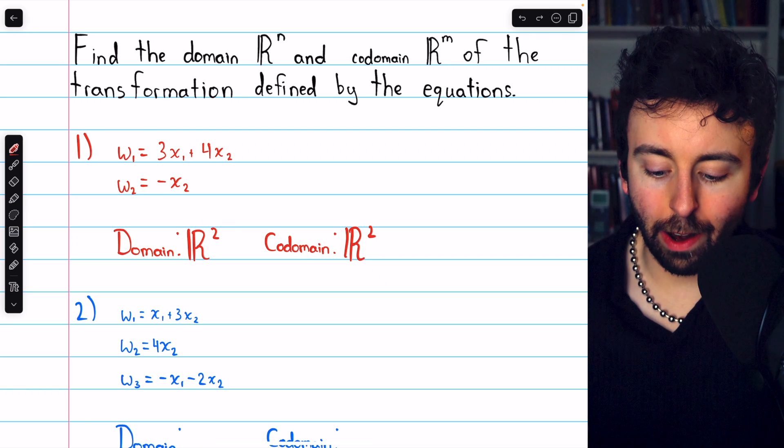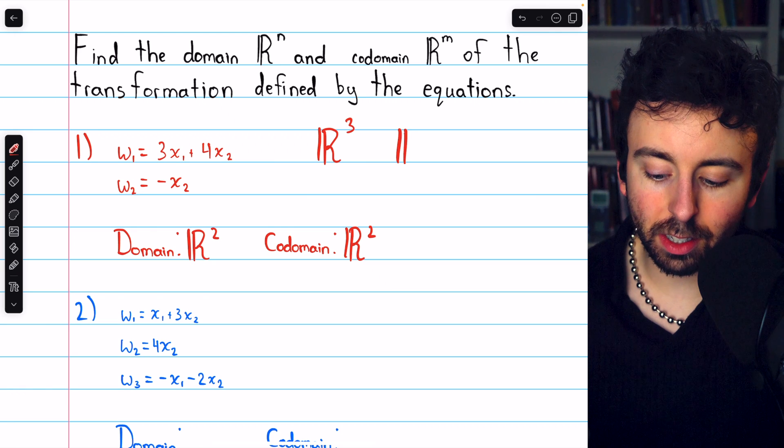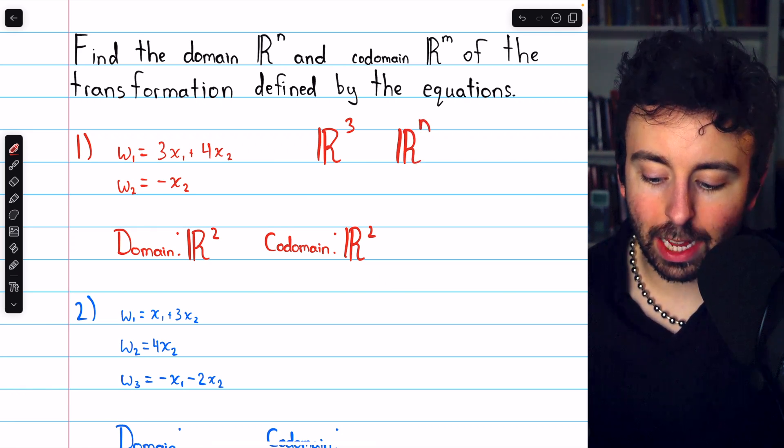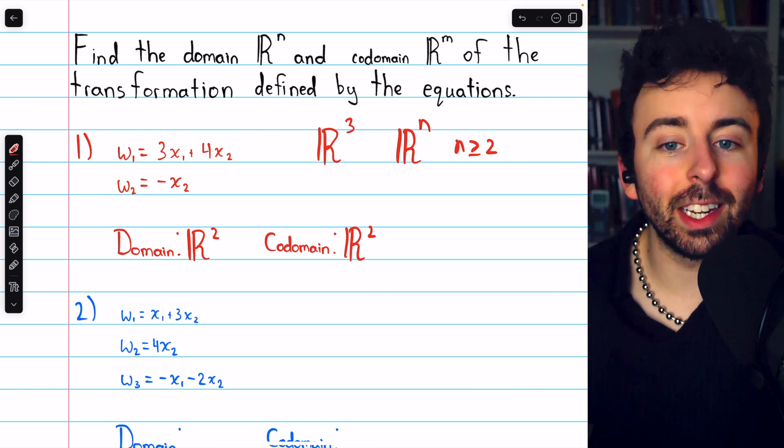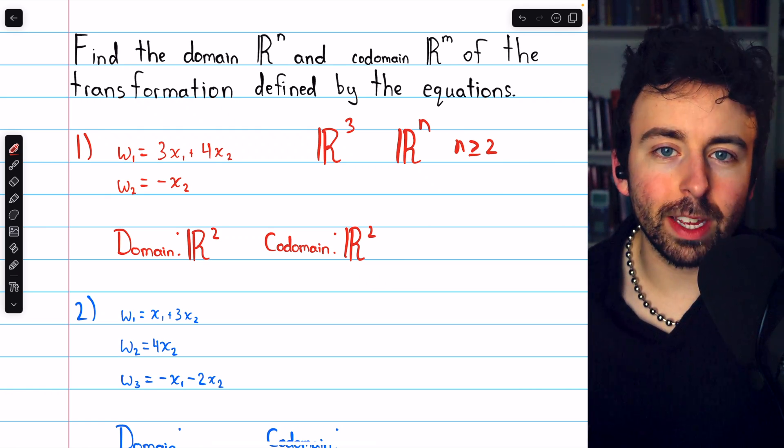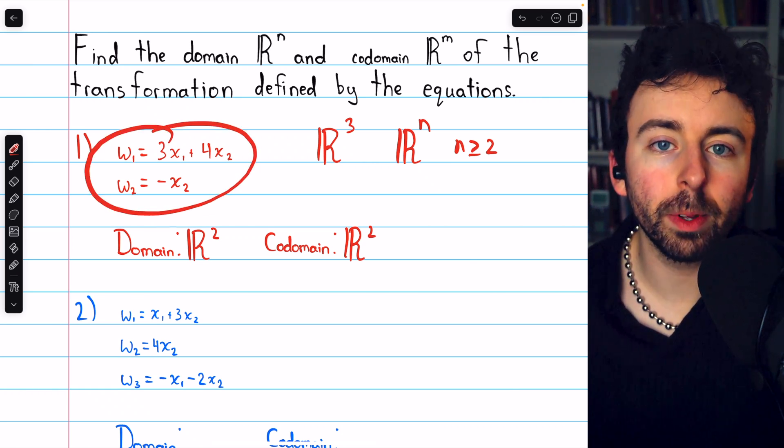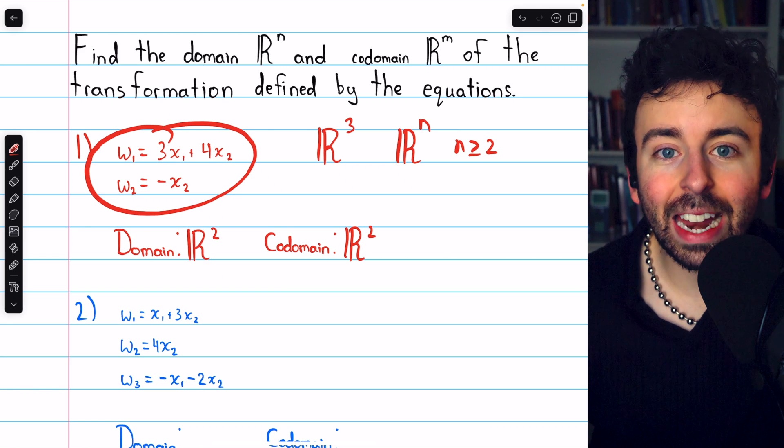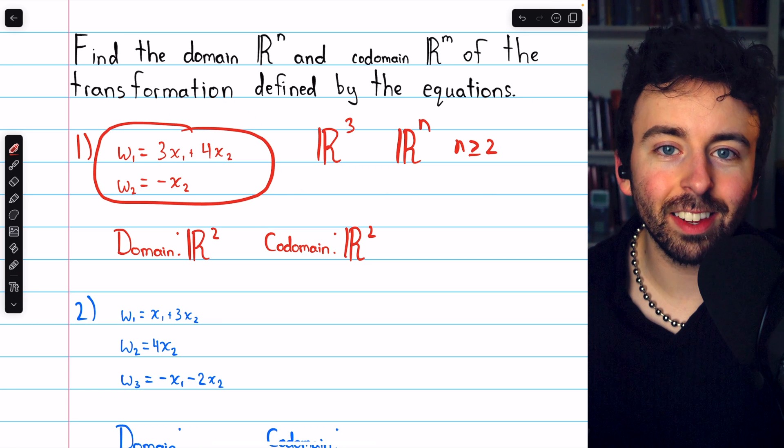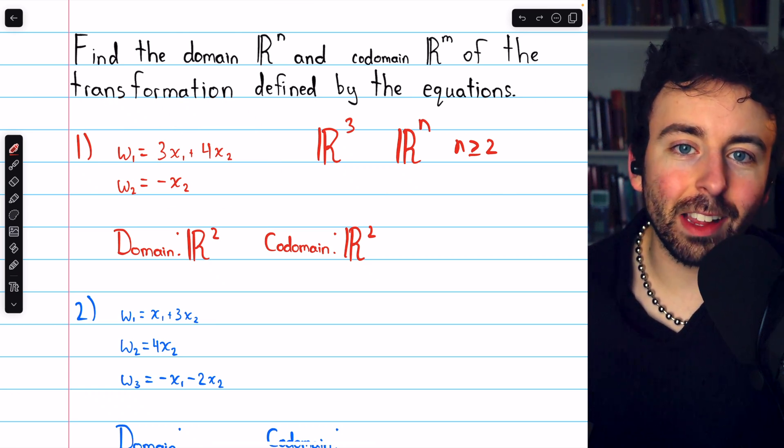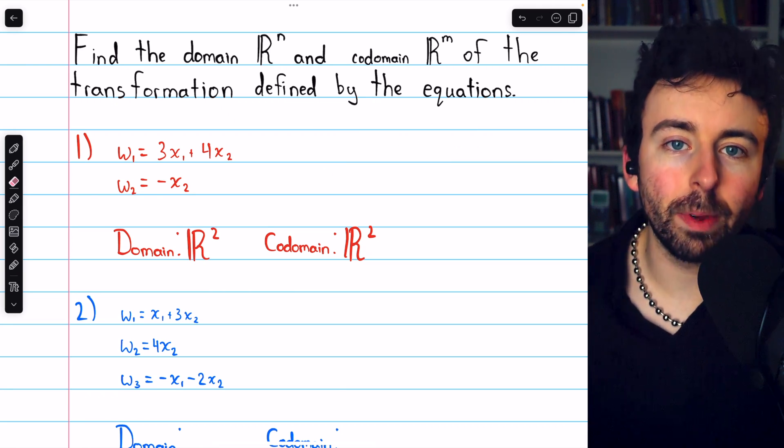Now, we said the domain was R², but technically, the domain of this transformation could be defined to be R to any power, as long as that power is at least two, because it could just be that those additional components, x₃, x₄, whatever, are just not part of the computations for the output variables. It could just be that the output variables don't depend on those additional inputs, and so we don't see them show up in the transformation equations. But we'll assume that's not the case for these problems. We'll assume that the only relevant variables are the ones that actually appear in the equations.